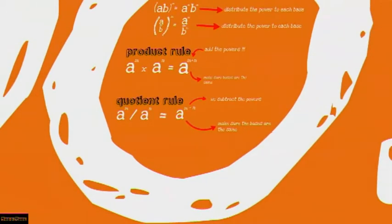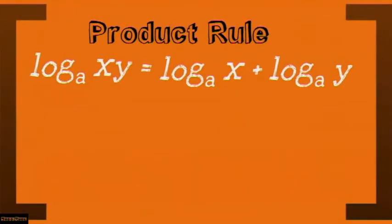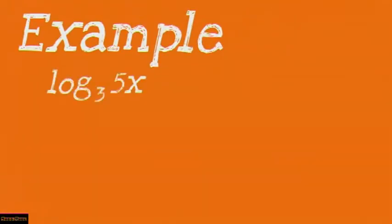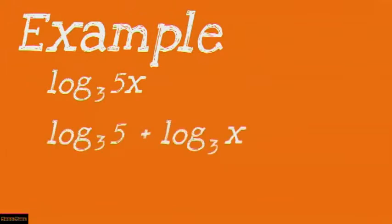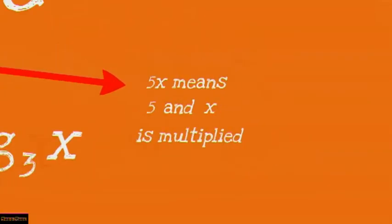Now let's look at how these laws are applied in logs. The product rule states that if given log base a of (x·y), this will equal log base a of x plus log base a of y. The x and y are being multiplied together, so they can be split into two separate logs that are added. For example, given log base 3 of (5x), this will equal log base 3 of 5 plus log base 3 of x, because 5x means 5 and x are being multiplied.